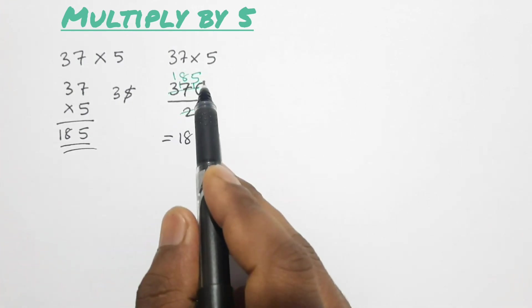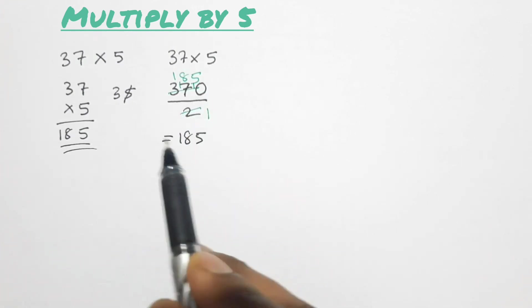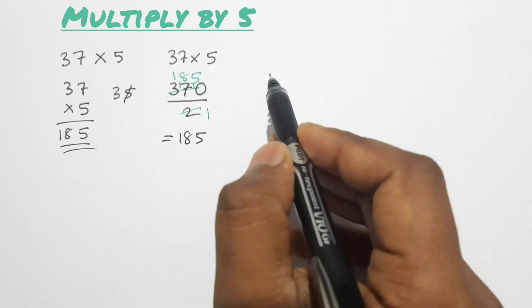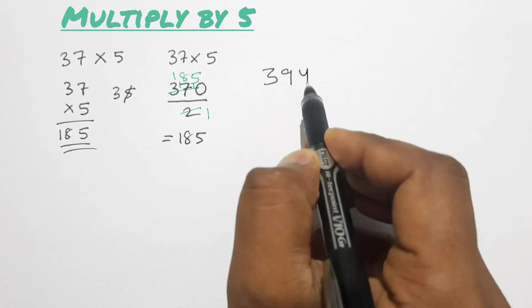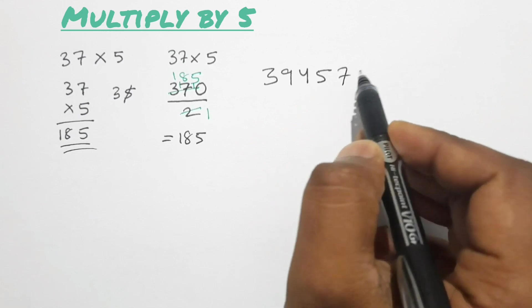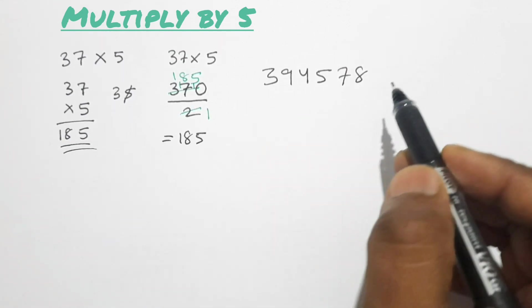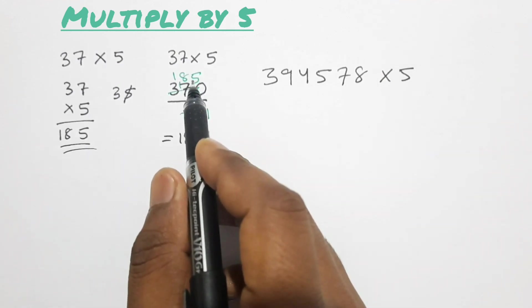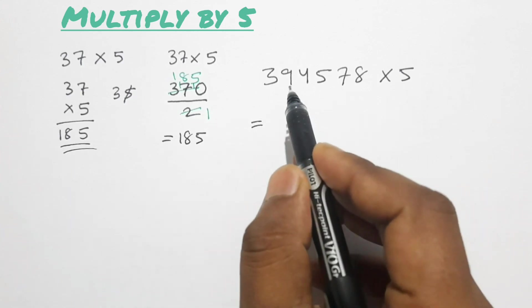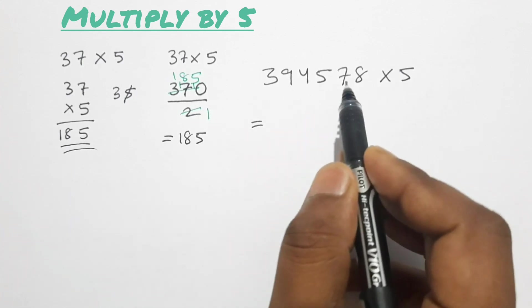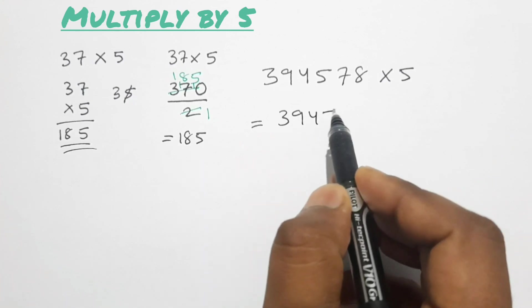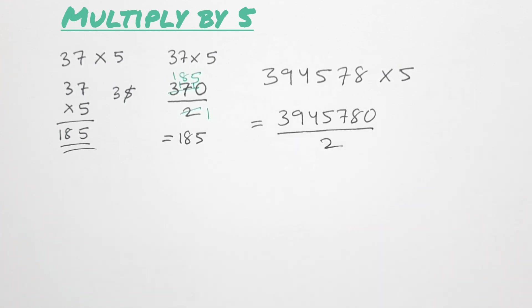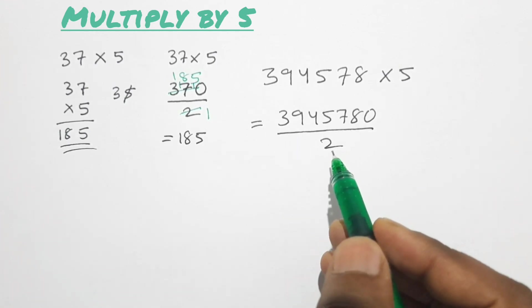Let's take a big number like 394578. When we multiply this number by 5 using the shortcut method it will take much shorter time. First we multiply the given number by 10 — we just put a zero behind the number to get 3945780 — and then divide by 2.